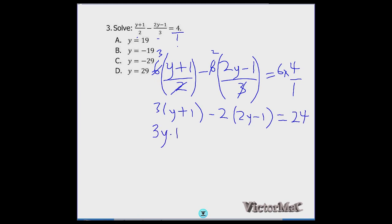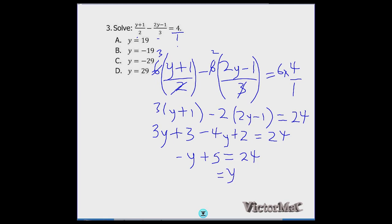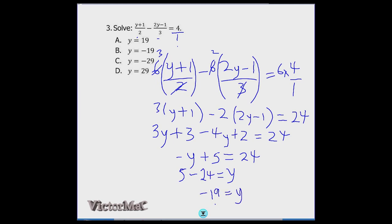Expanding: 3y + 3 minus 4y plus 2 equals 24. Collecting like terms: 3y minus 4y is minus y; 3 plus 2 is 5; so minus y + 5 = 24. Transferring: y = 5 minus 24 = minus 19. The correct option is option B.